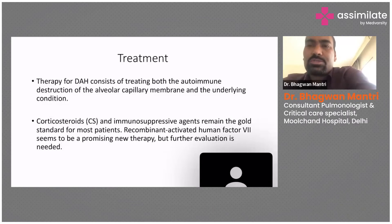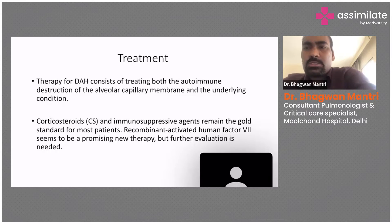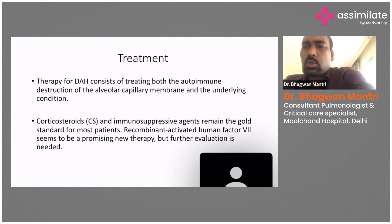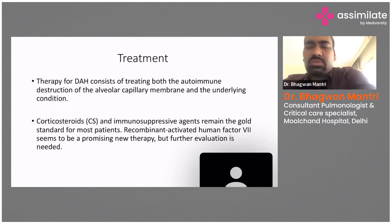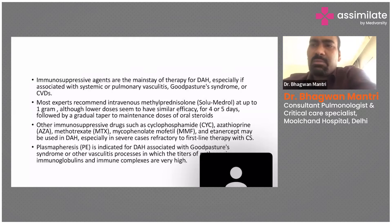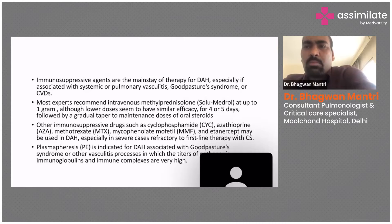Irrespective of the diagnosis of the underlying CVD, the acute treatment of DAH — once we diagnose that this is DAH — requires corticosteroids and immunosuppressive agents. These are the gold standard for patients currently. There is a lot of data regarding recombinant activated human factor seven, but that is still under study and in a few years we may know whether it is also helpful.